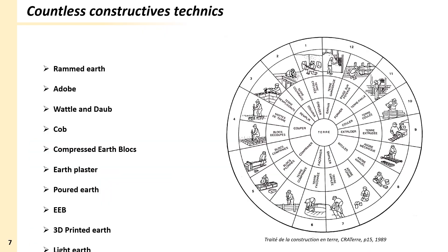There are many construction techniques and I won't have time to detail all of them, but there are differences in the water content of fabrication, implementation methods, and compaction methods. To illustrate this, I will present the four main load-bearing earthen construction techniques: rammed earth, compressed earth blocks (CEB), cob, and adobe.